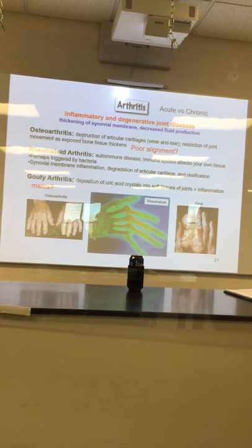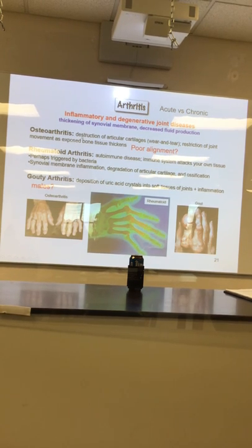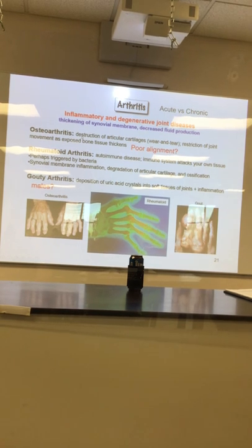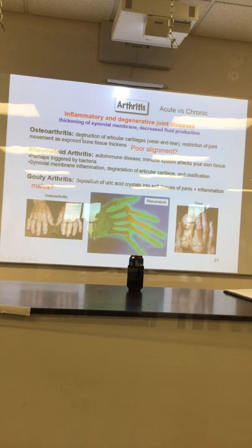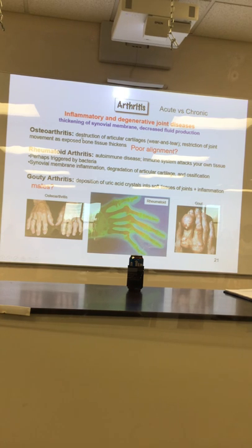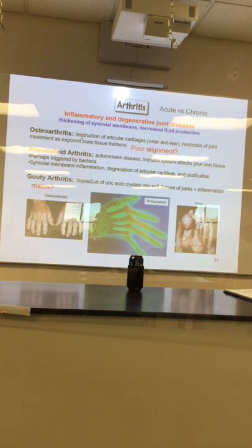Where does gout typically pop up? The big toe — you get this weird big toe issue, it's killing you. It's like a little rock inside the joint. Normally we're not talking about these extreme visible deposits; normally it's small microscopic crystals with sharp edges.